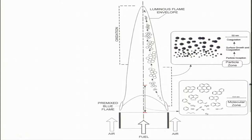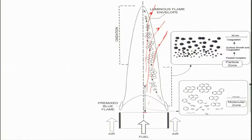As we move outward, particle size increases — this is the particle zone. Depending on the streamline, the particle will move through the flame. Some streamlines will carry the particle through the high-temperature flame zone where it gets oxidized, and particle size decreases again. So more time spent in the high-temperature zone means a greater reduction in particle size.